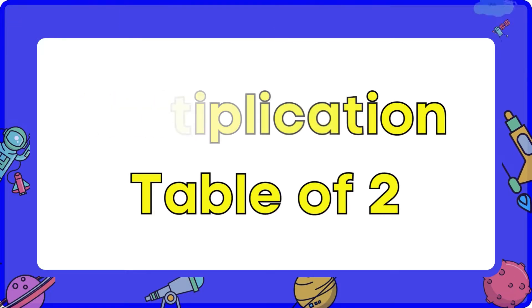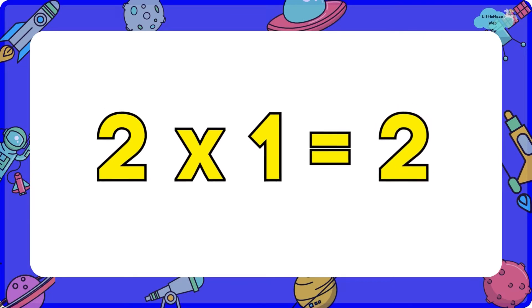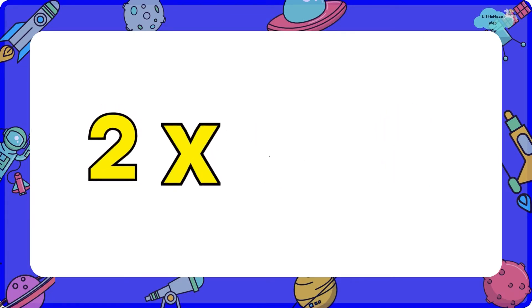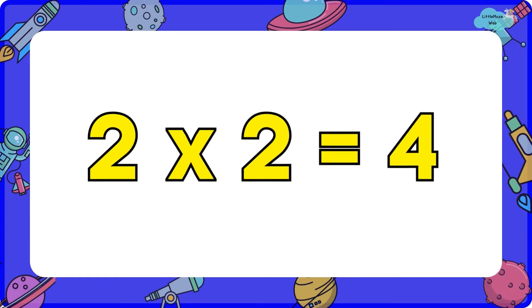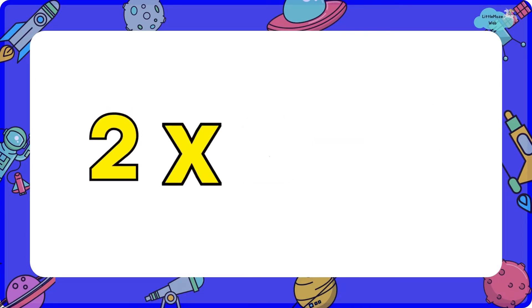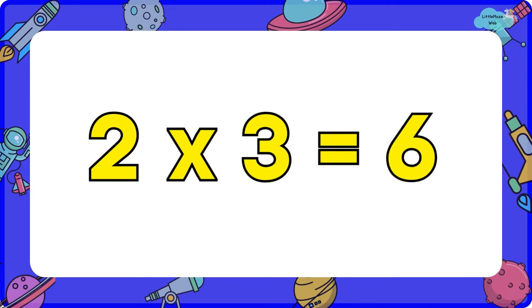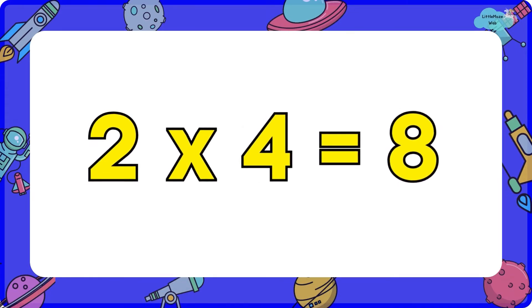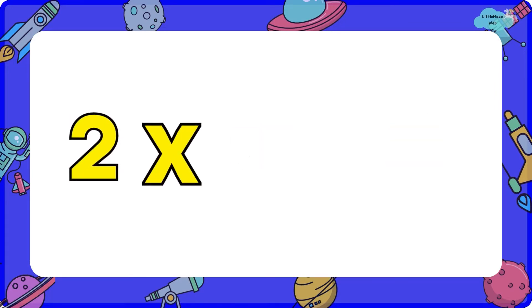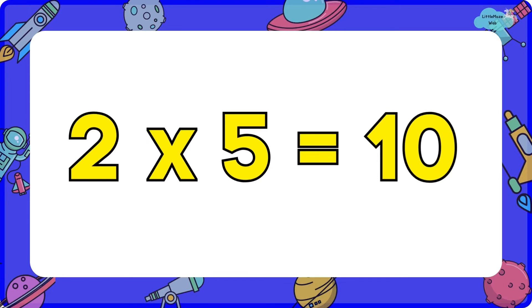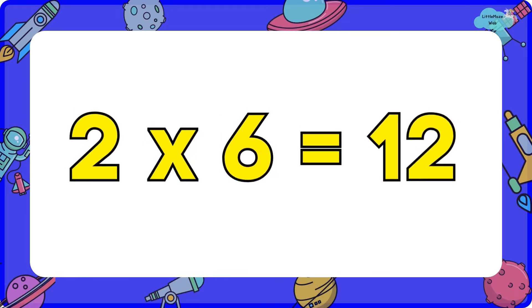Two ones are two. Two twos are four. Two threes are six. Two fours are eight. Two fives are ten. Two sixes are twelve.